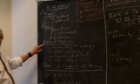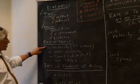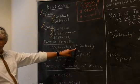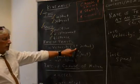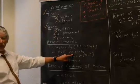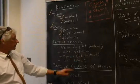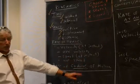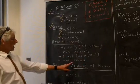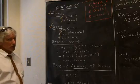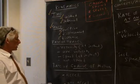Now let's talk about rate of travel. There's velocity at an instant, and then there's average velocity between two instants. There's speed at an instant, and there's average speed. You have to be really careful — this can be tricky.